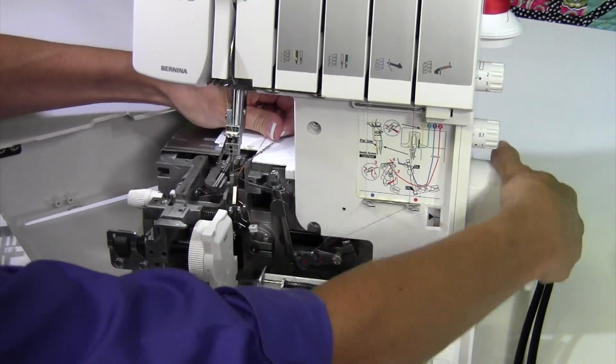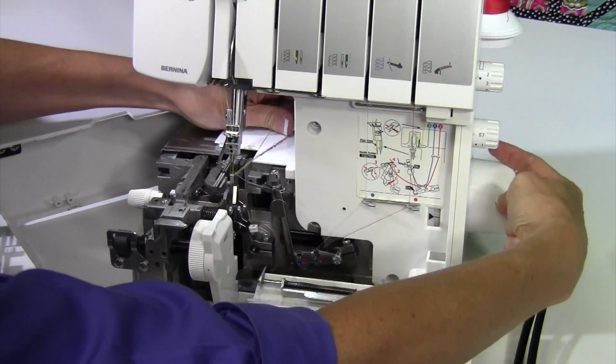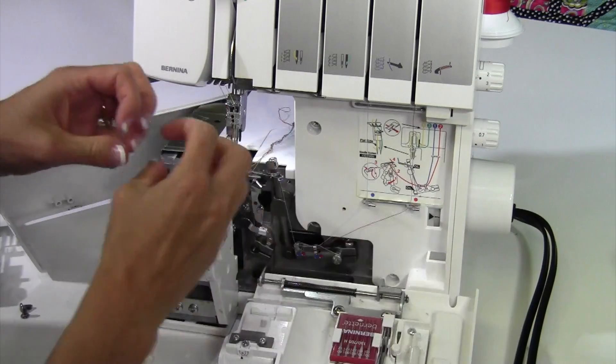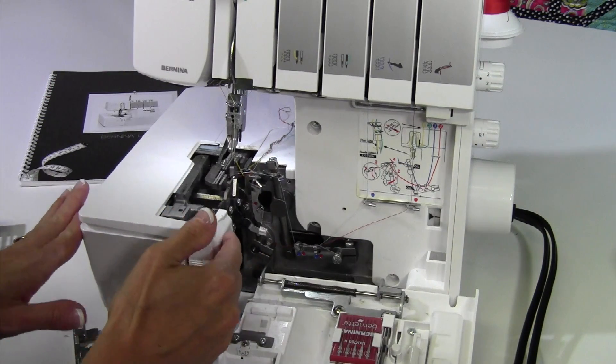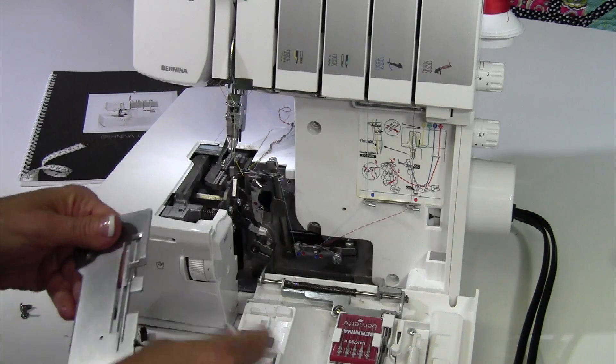Afterwards, you can go ahead and run the serger, and all those areas will get a little disbursement of that oil. When you go to put everything back together, we'll do our throat plate. We're checking, making... oh yeah, a little bit more on the back side.